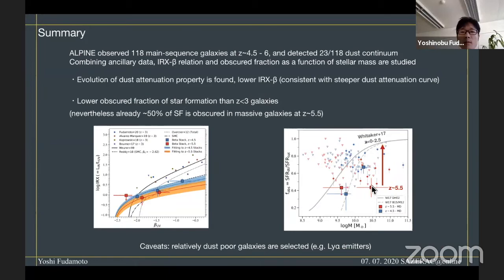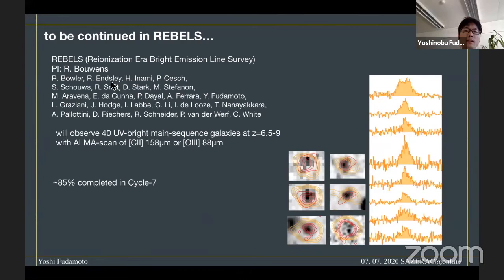We are now working with another ALMA large program, REBELS. REBELS is PI'd by Richard Bouwens and will observe 40 UV-bright main sequence galaxies with photometric redshift of 6.5 to 9. We will scan the C-plus and OIII emission lines of these galaxies. In Cycle 7, we already got 85% of data and we are getting very exciting results. Hopefully in the near future, we can publish these exciting results quite soon. Thank you very much.